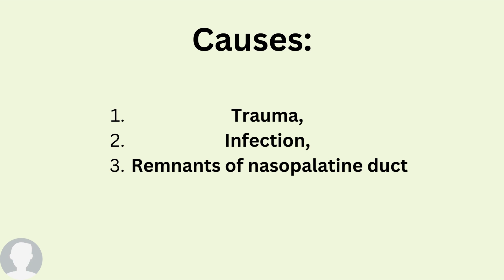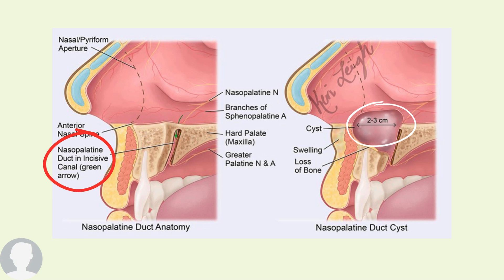Another suspected cause is infection — not coming from the teeth, since it is a non-odontogenic cyst, but infection coming from the palate. Lastly, remnants of the nasopalatine duct: as seen in the picture, obstruction of the nasopalatine duct — for example, by a stone — prevents it from releasing its content, resulting in accumulation and formation of the nasopalatine duct cyst.